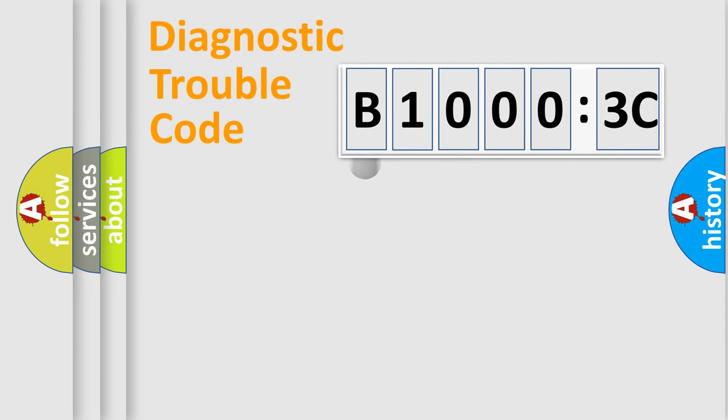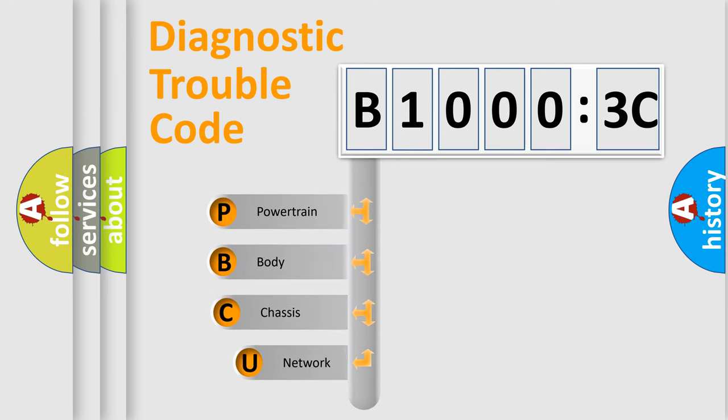First, let's look at the history of diagnostic fault code composition according to the OBD2 protocol, which is unified for all automakers since 2000. We divide the electric system of automobile into four basic units.